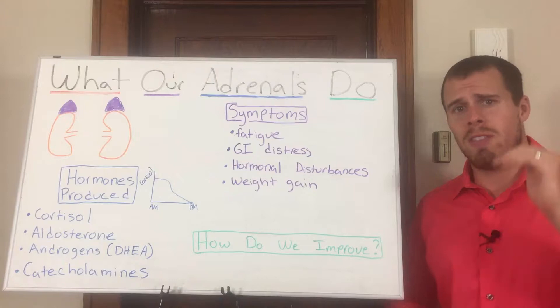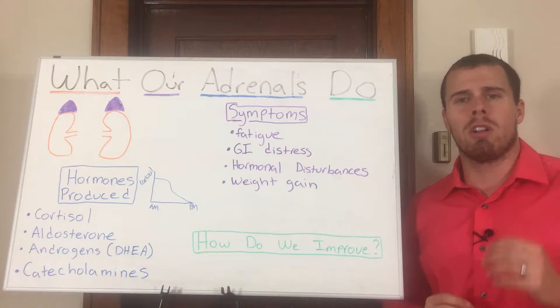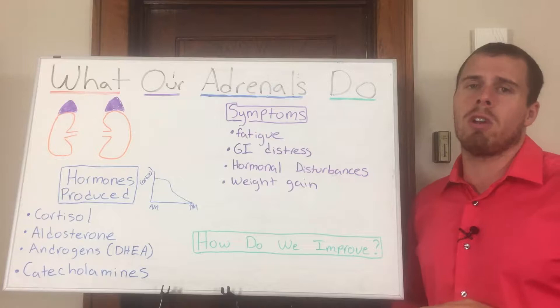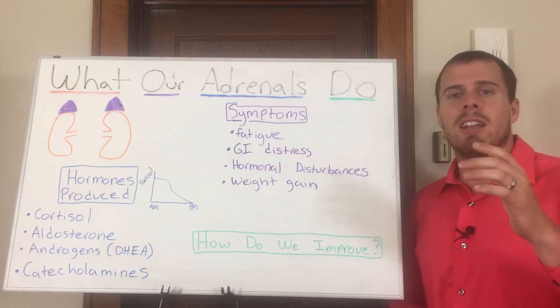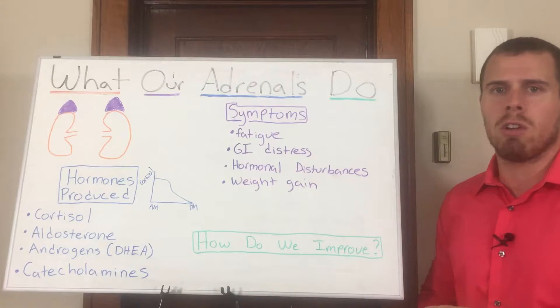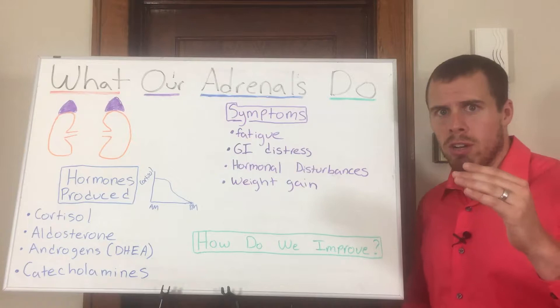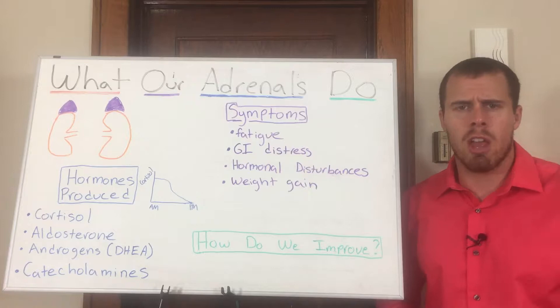The adrenals are broken into two sections essentially. We have the upper section, which is the adrenal cortex, and then we have the middle section, which is called the adrenal medulla. When we're thinking about the adrenal cortex, that can be broken up into three layers. The first layer is the zona glomerulosa, and that releases cortisol. The second layer is going to be the zona fascicularis, and that's going to release aldosterone — aldosterone is important for retaining sodium, which will help bring in fluid and balance our blood pressure. And then the last layer is going to be the zona reticulata.